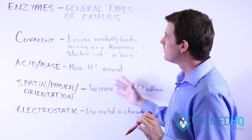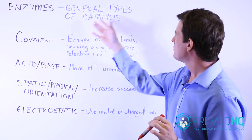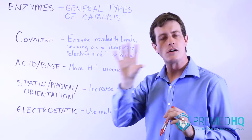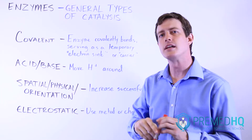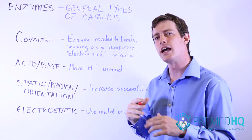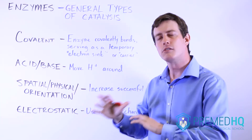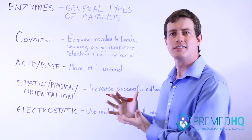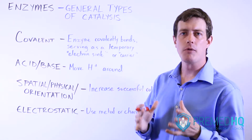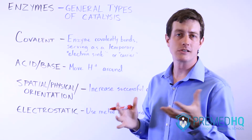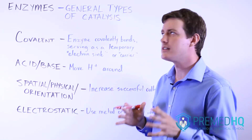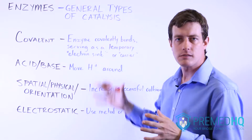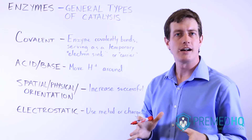What we're going to go into is the types of catalysis. So rather than looking at what you start with and end up with, instead we're going to look at while the reaction is occurring, how is the enzyme helping make this reaction possible — what is its type or mechanism of catalysis?